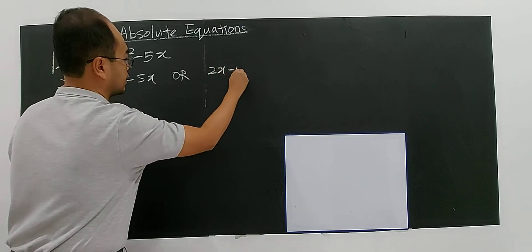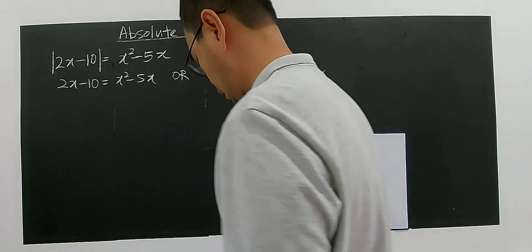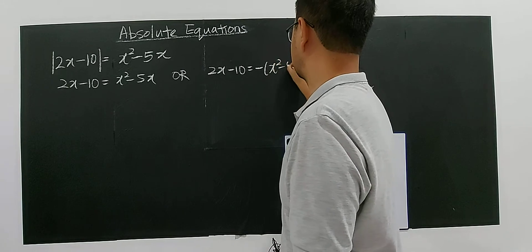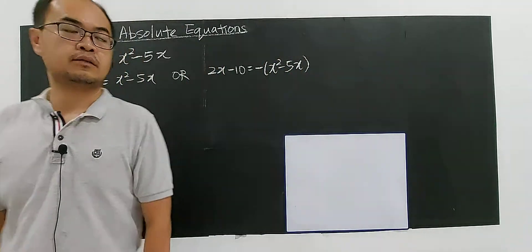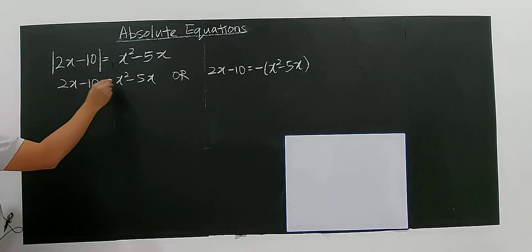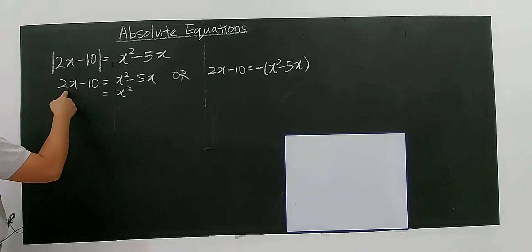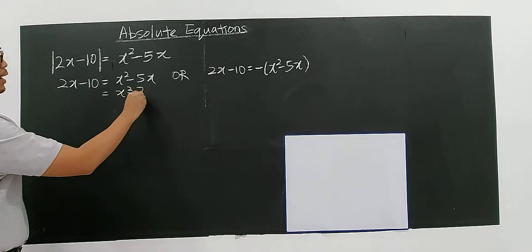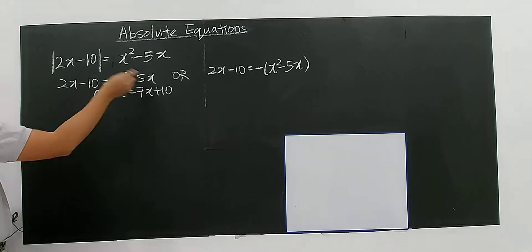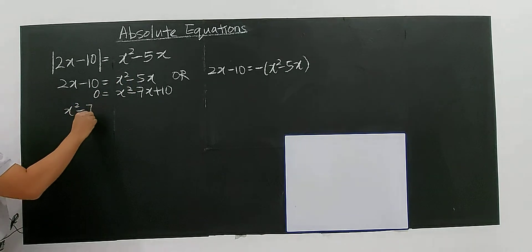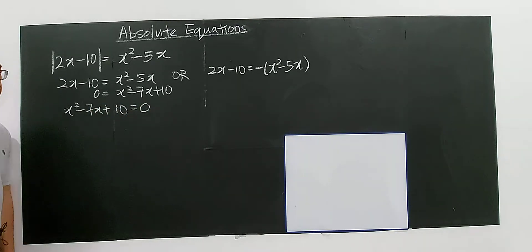...2x minus 10 equals the negative of x squared minus 5x. For the first case, you have x squared minus 5x minus 2x, giving negative 7x, plus 10 equals 0. Moving everything to one side: x squared minus 7x plus 10 equals 0.